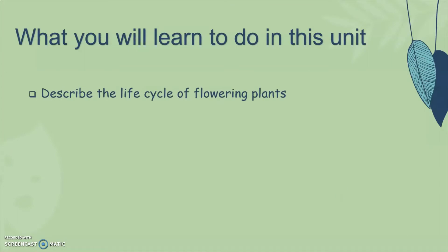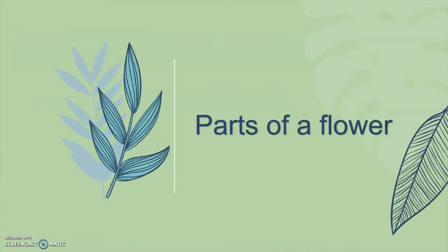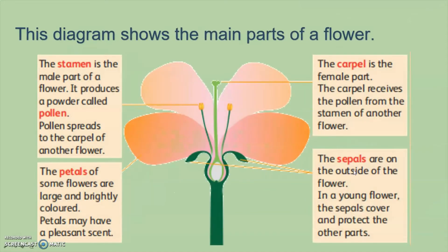Now, parts of plants — or parts of flowers. This diagram shows the main parts of a flower. In this flower, we have the stamen. The stamen is the male part of a flower. It produces a powder called pollen. Pollen spreads to the carpel of another flower.